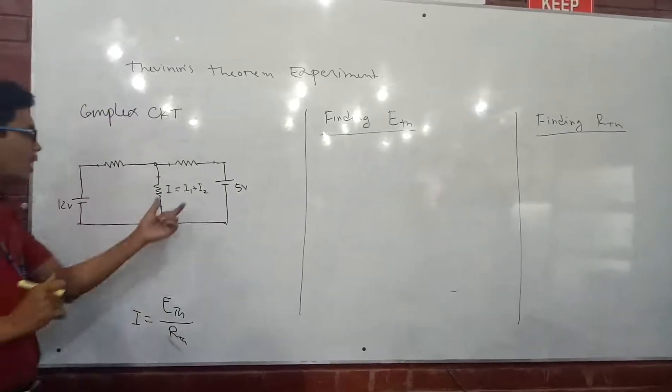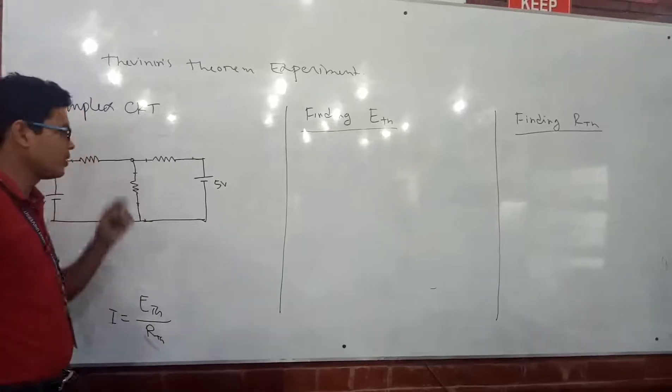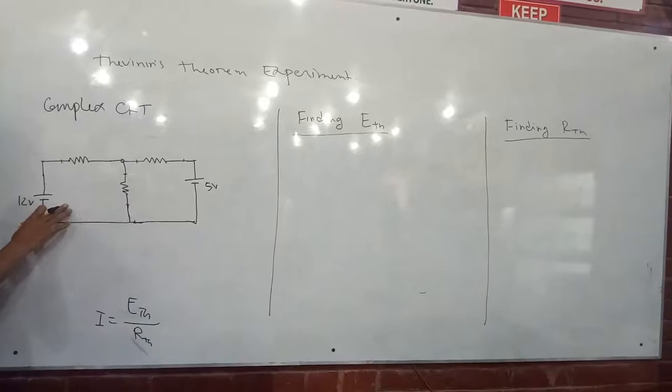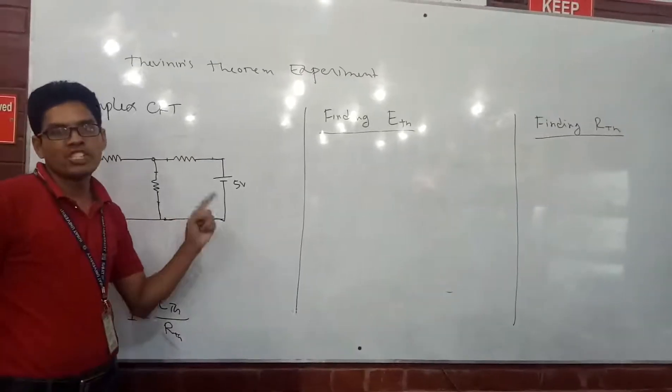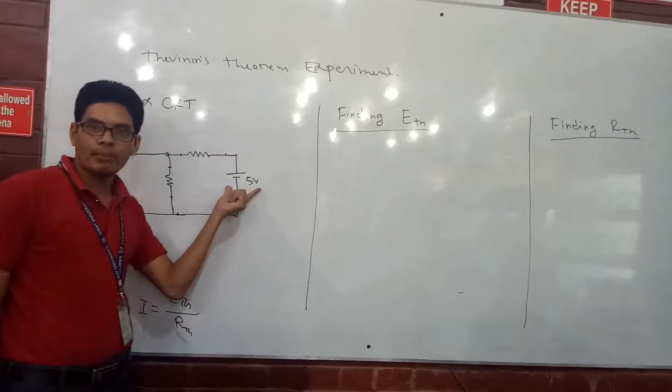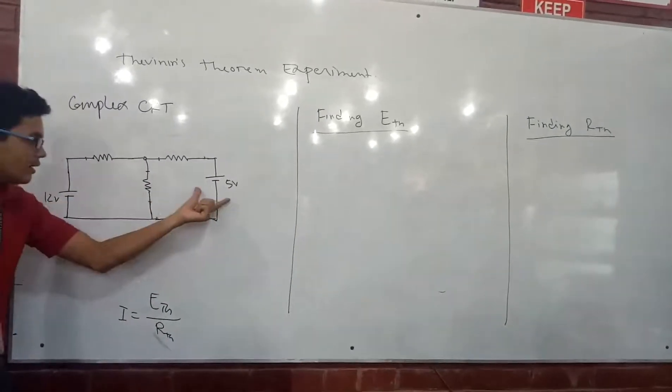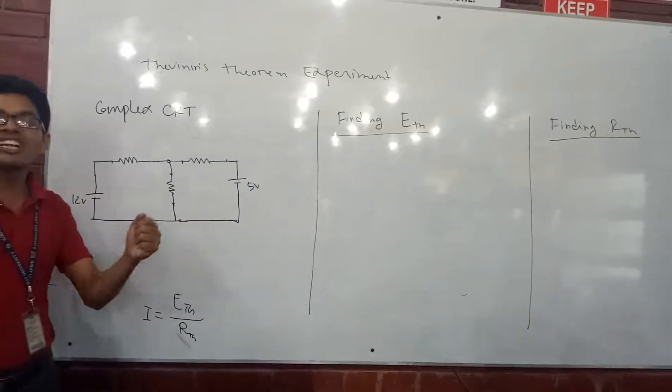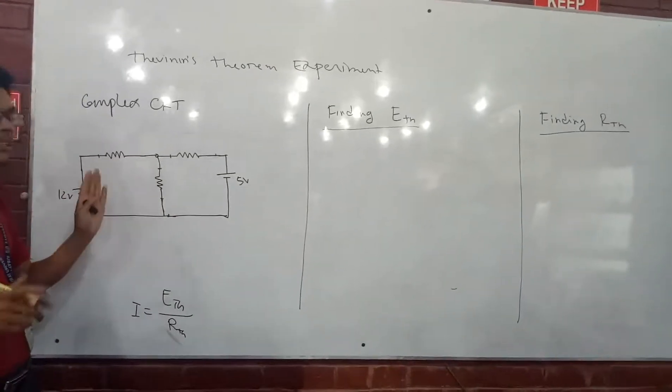Now what we're going to do here with Thevenin, the first job: both sources are working here, right? That means due to both sources there is effective current. This source has potential, so within the combination of both sources there is an effective potential resulting for the circuit.